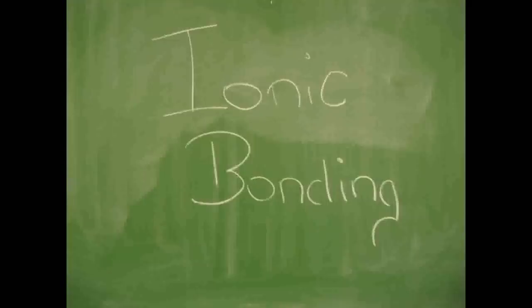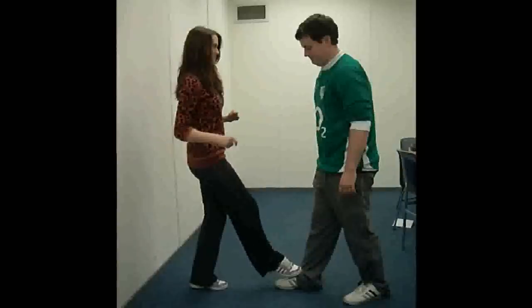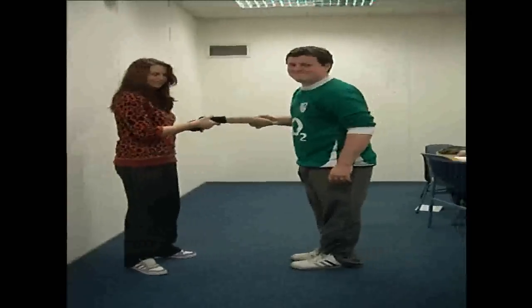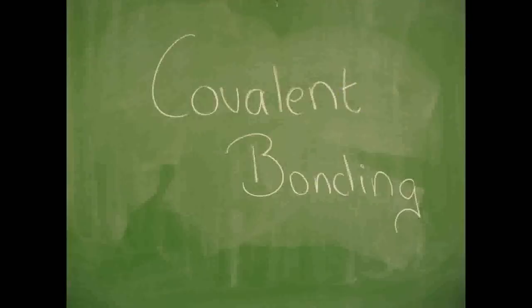This is called ionic bonding. If two atoms from the right try to bond, they both want to gain electrons from each other. As a compromise, they overlap their shells and share electrons. This is called covalent bonding.